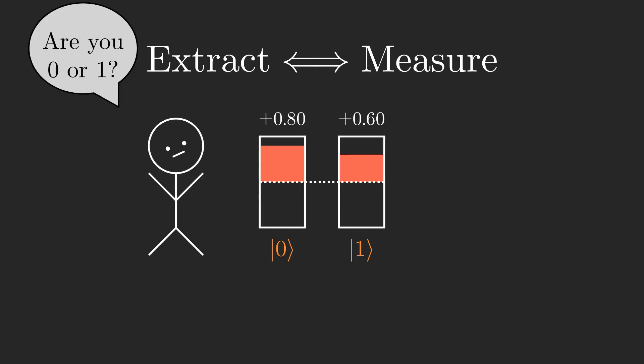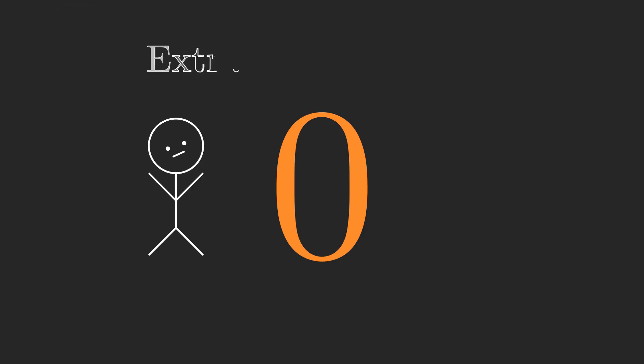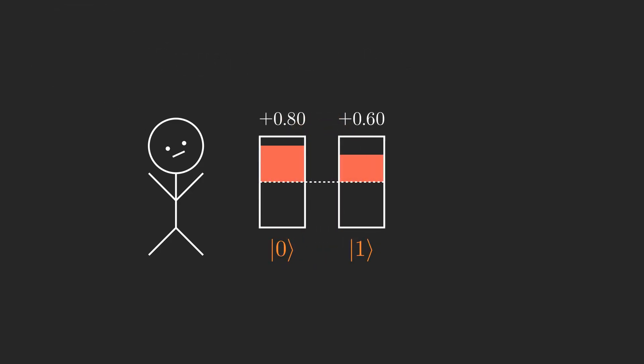That is, a measurement of a qubit will either read 0 or 1, and the superposition will be destroyed. Where the amplitudes come into play is the bizarre and amazing fact of nature that the probability that this measurement reads a 0 is equal to the square of the amplitude on the basic state 0, and the probability that it reads a 1 is equal to the square of the amplitude on the basic state 1.